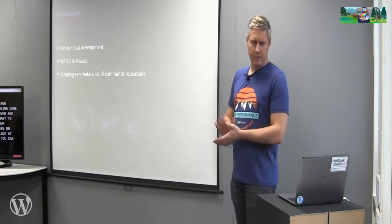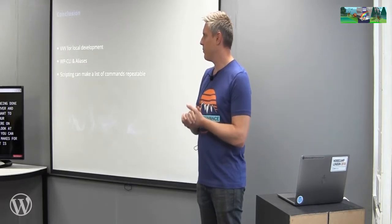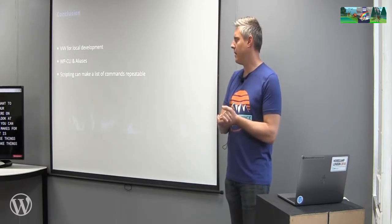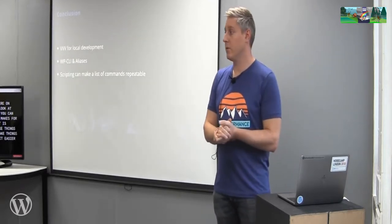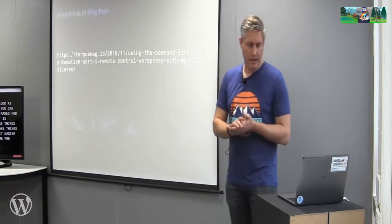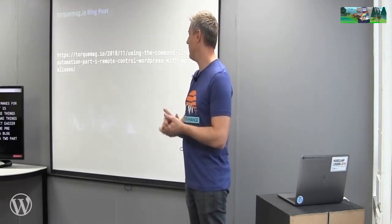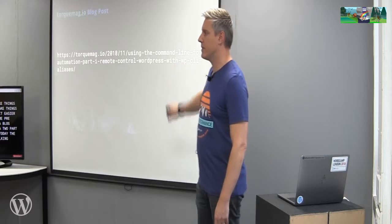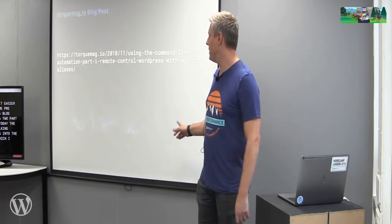In conclusion, you can use aliases and WP CLI with VVV to make a really great system. It's pretty straightforward and can make things a lot quicker. Scripting can make things repeatable and make life easier with some pre-planning. I've just put a blog post on Torque Magazine — it's a two-part series about what I talked about today. The first part is live and covers aliases; the second part covers the database export script and will be live tomorrow.